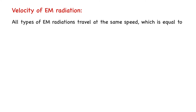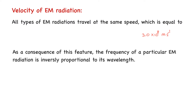One important feature of electromagnetic radiation is that all types of electromagnetic radiations travel at the same speed, which is equal to 3.0 times 10 to the 8 meters per second. This is a constant and its value will be provided to you in the exams. As a consequence of this feature, the frequency of a particular electromagnetic radiation is inversely proportional to its wavelength.